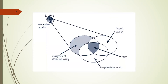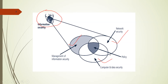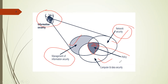In information security, the lens through which we view it is made up of three components: management or information security, network security itself, and data and computer security. A merger of all three is what we have as policy. The kind of policies you make should be comprehensive — ensure you have all the management components, the network security issues, and also computer and data security. To confirm you're secure, you need to have covered all three areas.